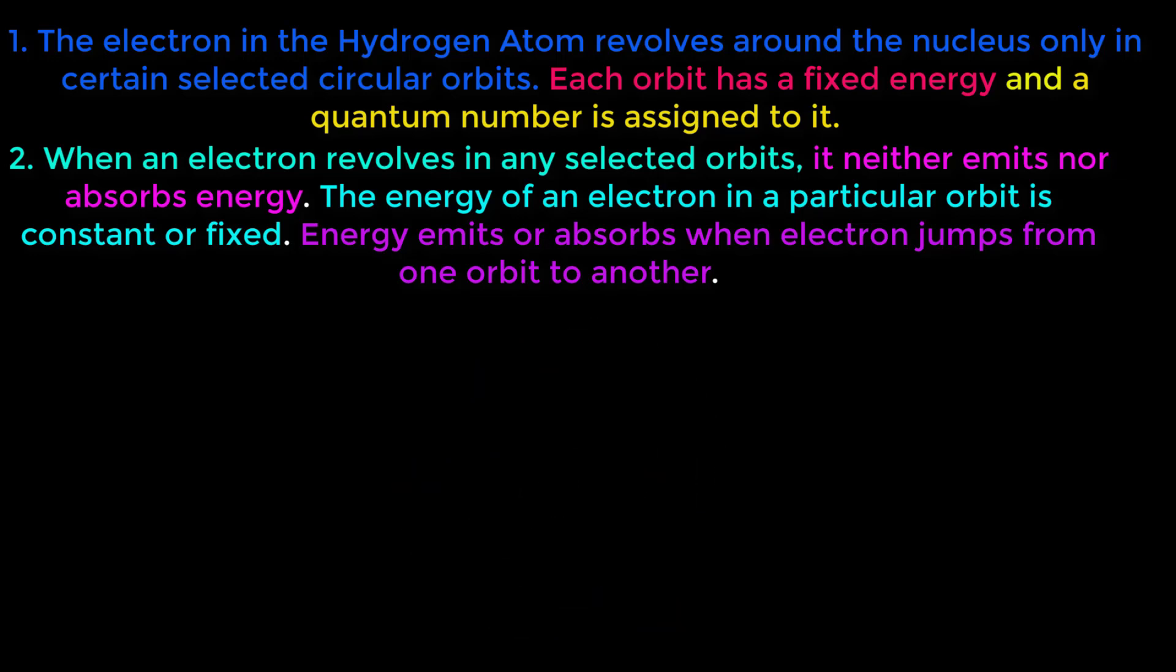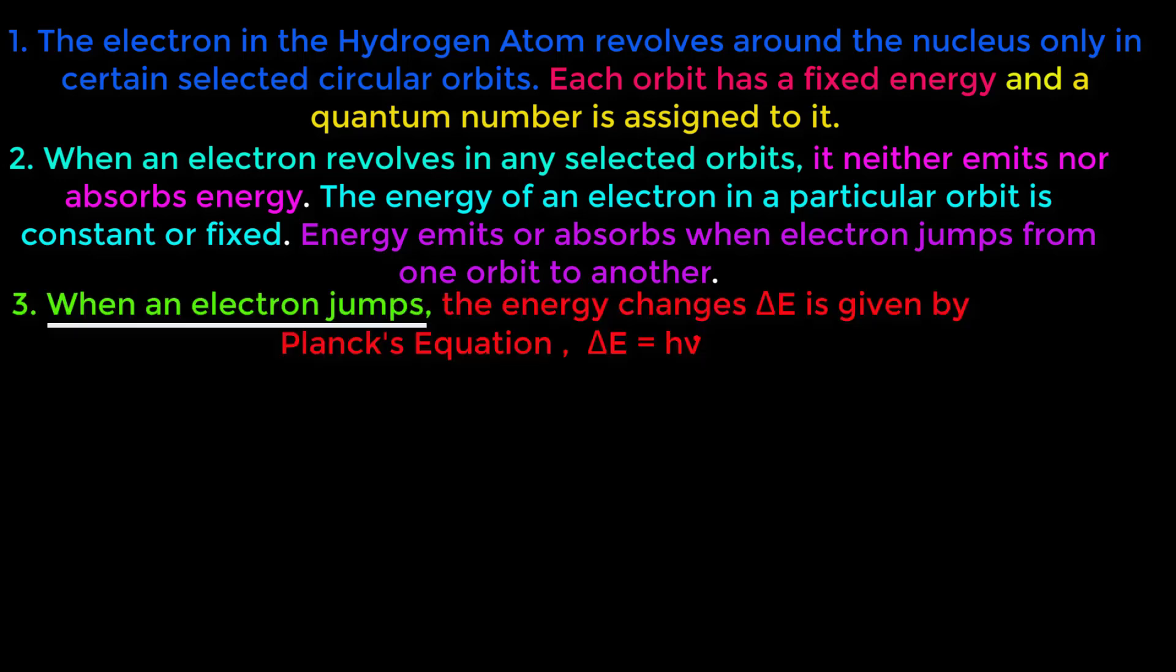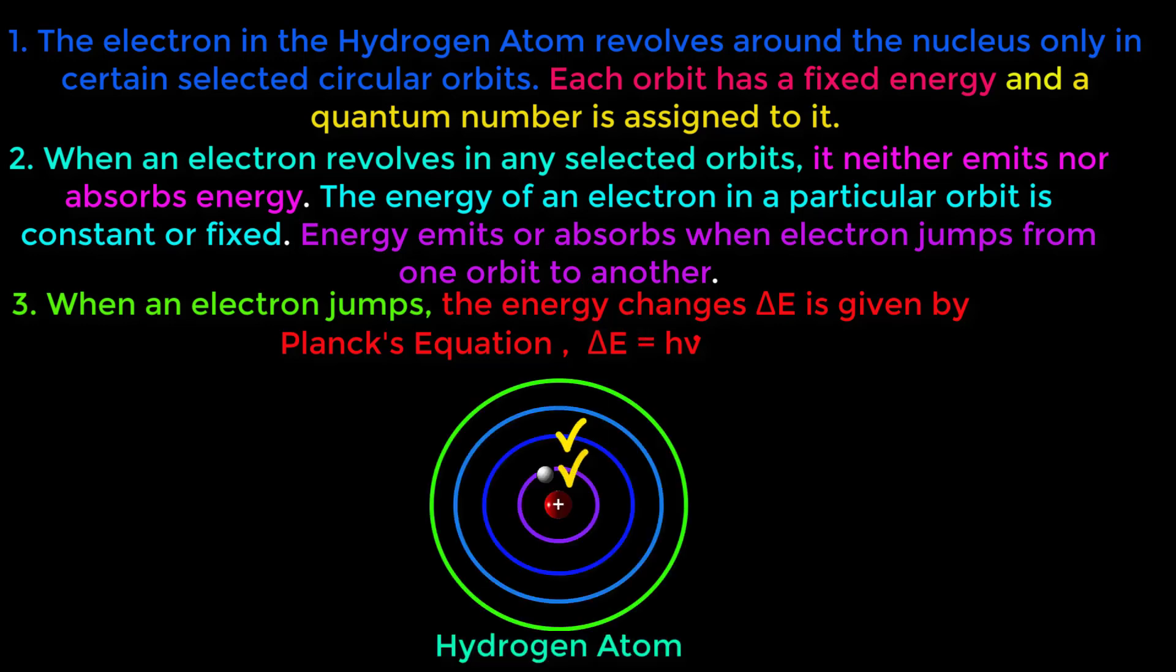The third postulate of Bohr's atomic model is: when an electron jumps, the energy change ΔE is given by Planck's equation. ΔE equals hν. What is ΔE? ΔE is nothing but the energy difference between two orbits having energies E₁ and E₂. So, we can write from here ΔE equals E₂ minus E₁ equals hν.